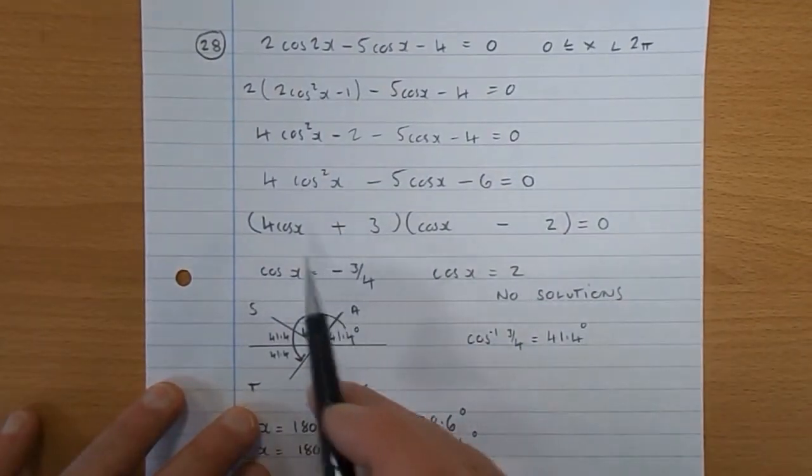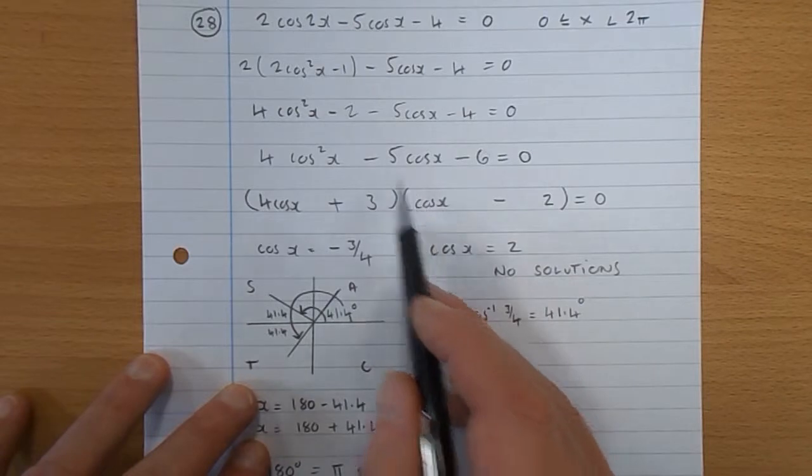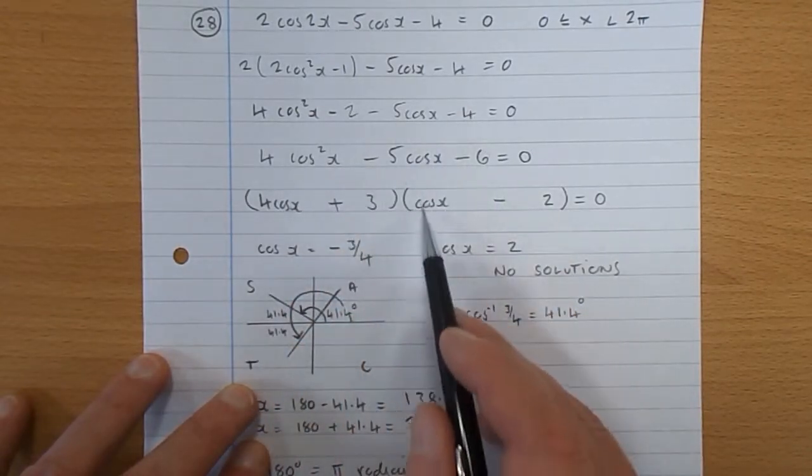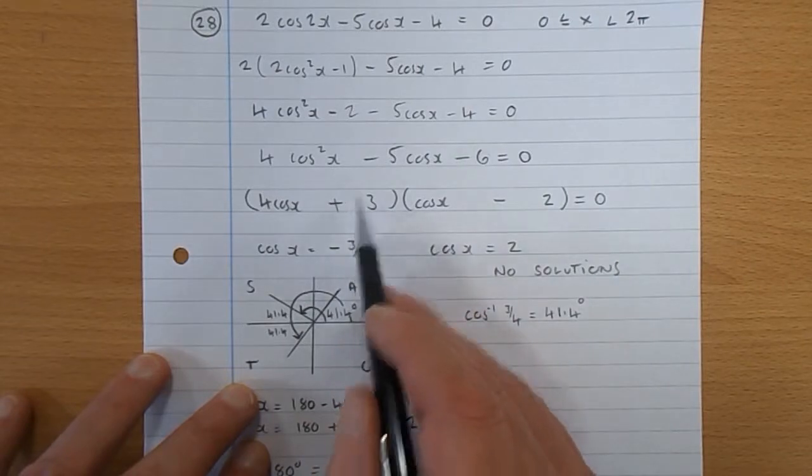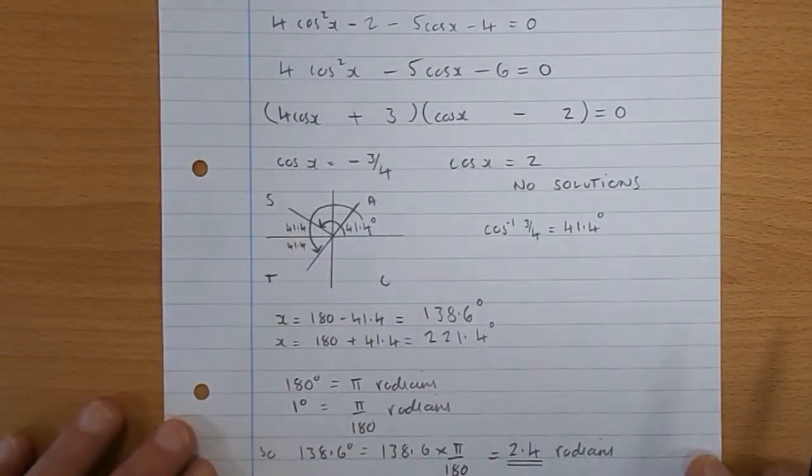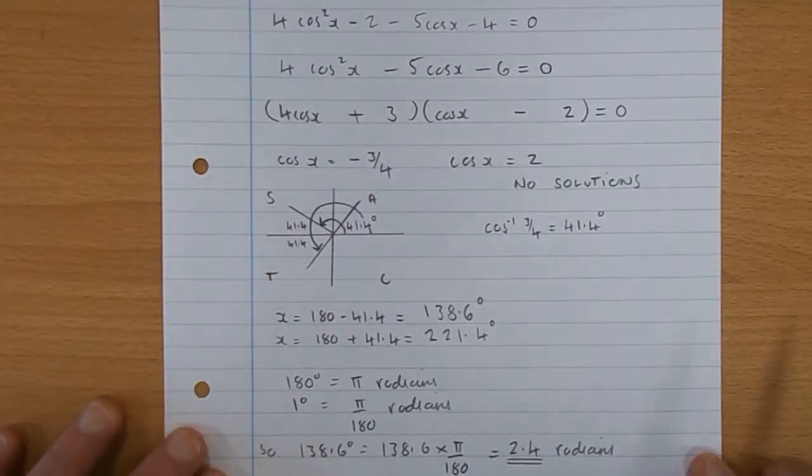Factorize it. 4cosx times cosx, 4cos²x take 8cosx plus 3cosx gives you minus 5. Plus 3 times minus 2 gives you minus 6. So we have two solutions: cosx is negative 3 quarters.